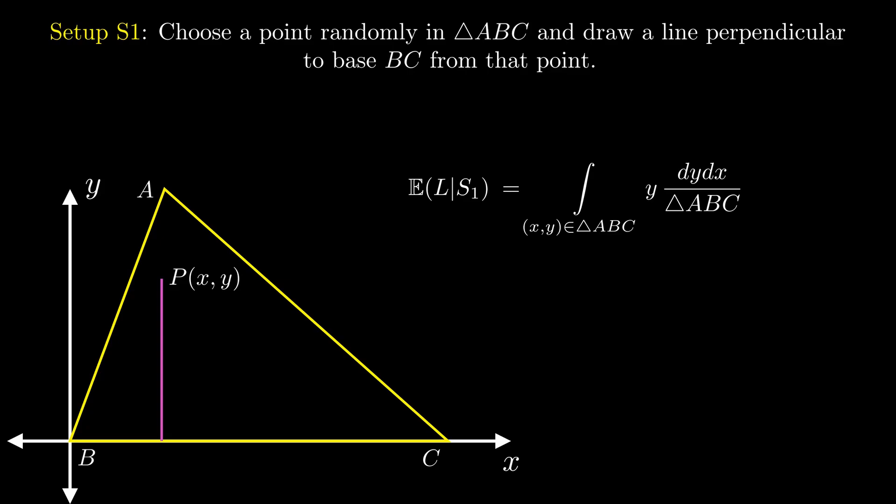This double integral is deceptively simple. While this integral is written as an expression for some expected value, from the perspective of mechanics, it is the y coordinate of the center of mass of the triangle. It is a classical result that the centroid of a triangle is located at a distance that is a third of its height from the base. This fact was used by Archimedes to find the area of the parabolic segment. That readily gives the result of this integral to be AD by 3.